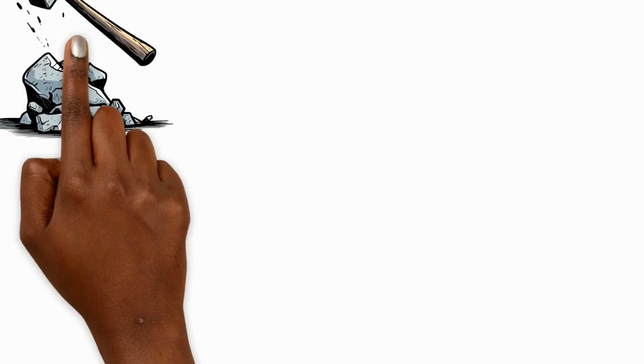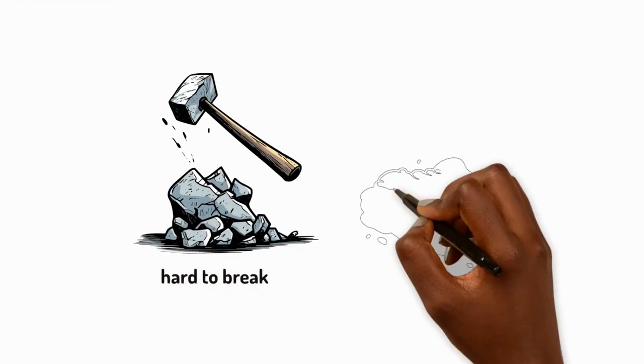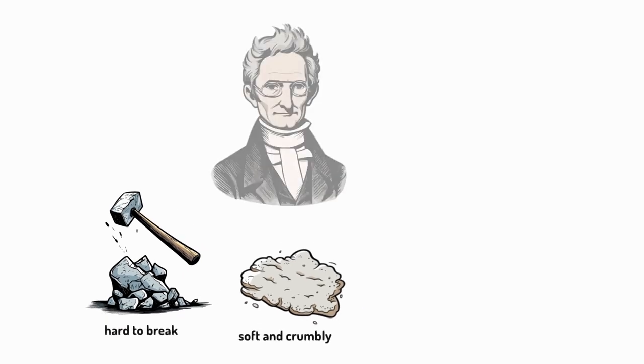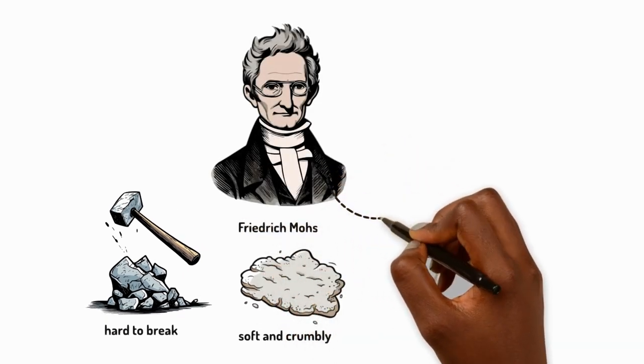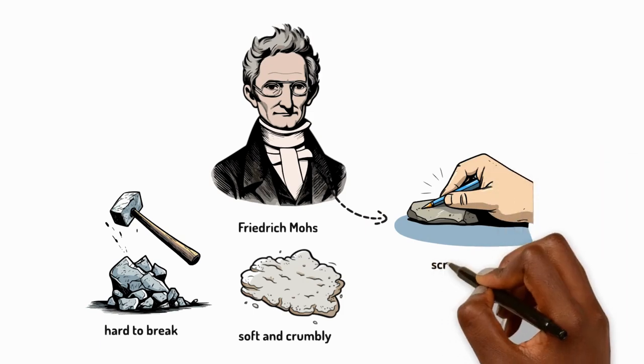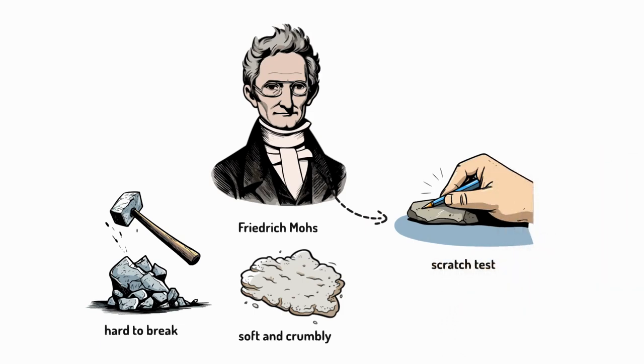Some rocks are hard to break while others are soft and crumbly. A man named Friedrich Mohs found a way to test rock hardness. A harder rock will scratch the surface of a softer rock. It's called a scratch test.